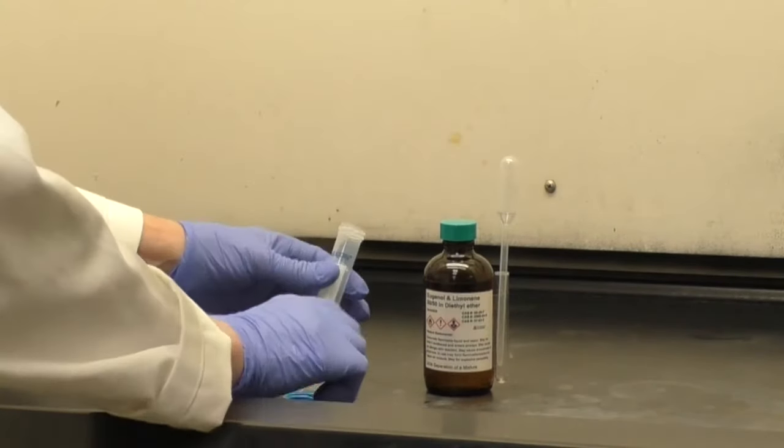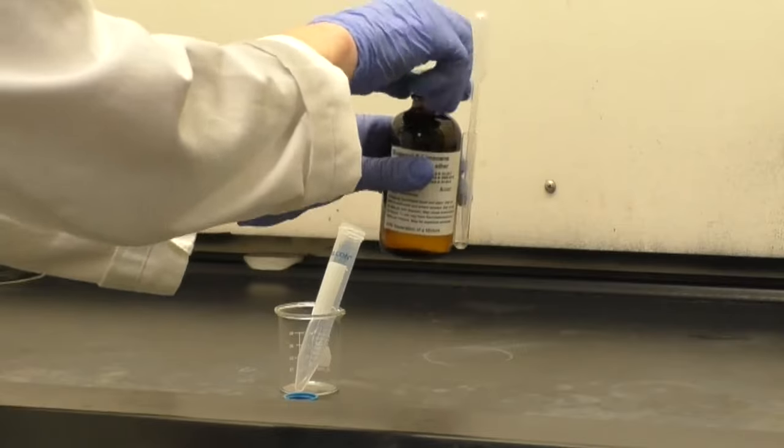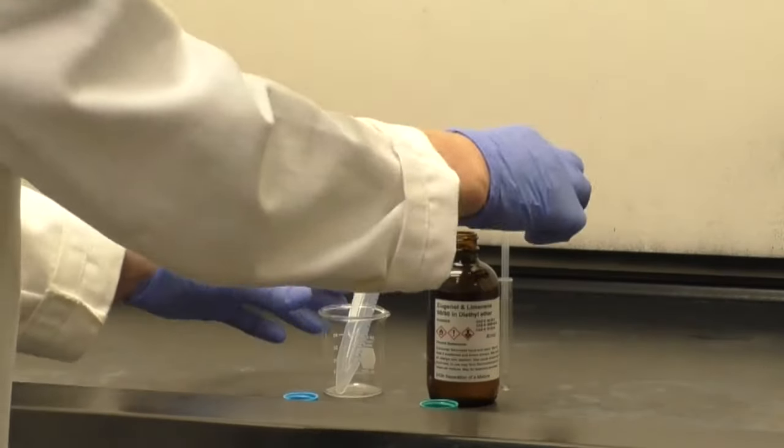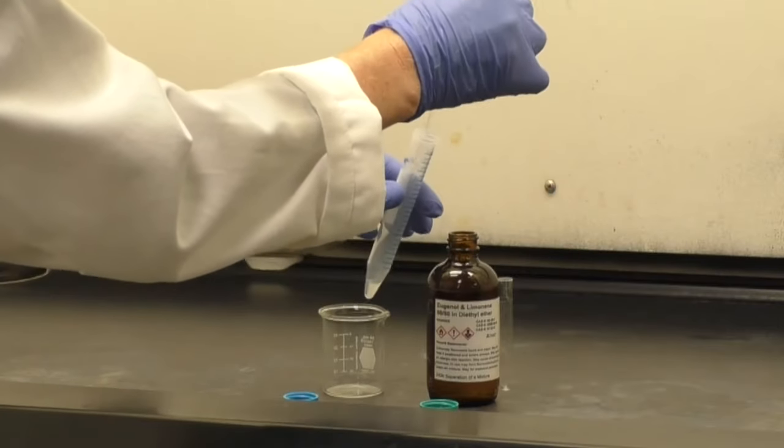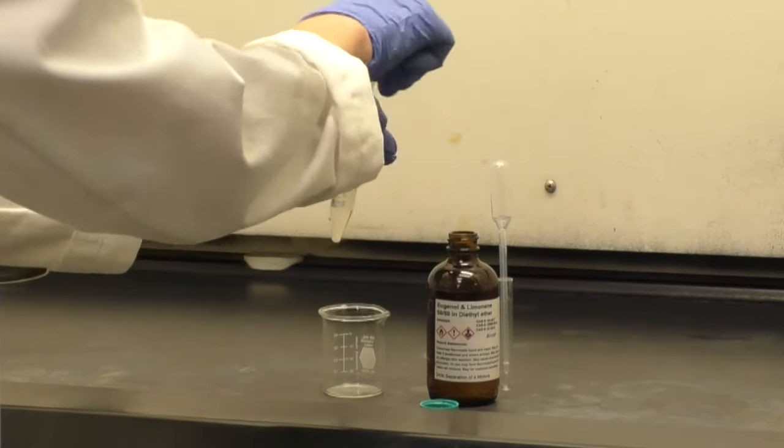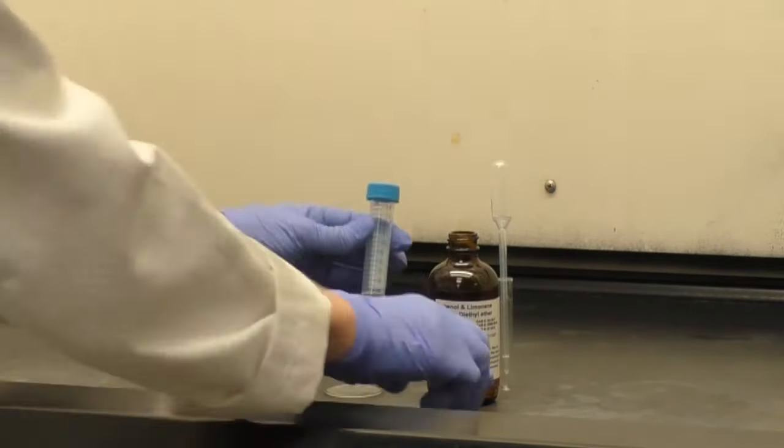To begin, put 5 mL of the solution into a clean, dry, 15 mL centrifuge tube. Use the graduations on the tube to measure your amount.